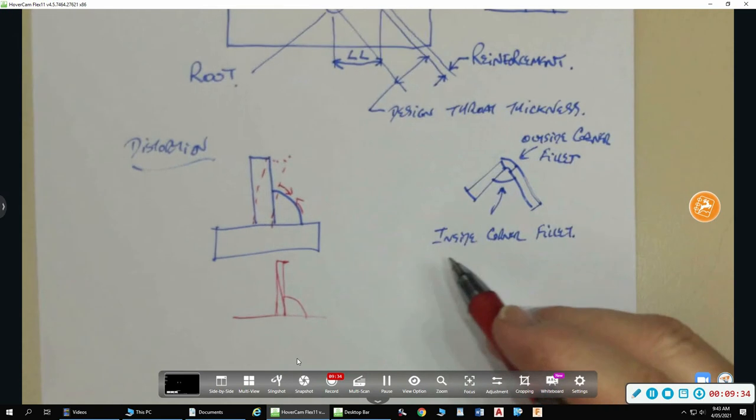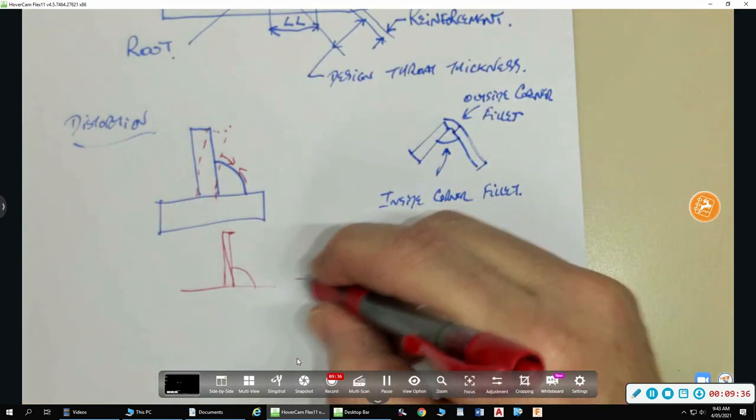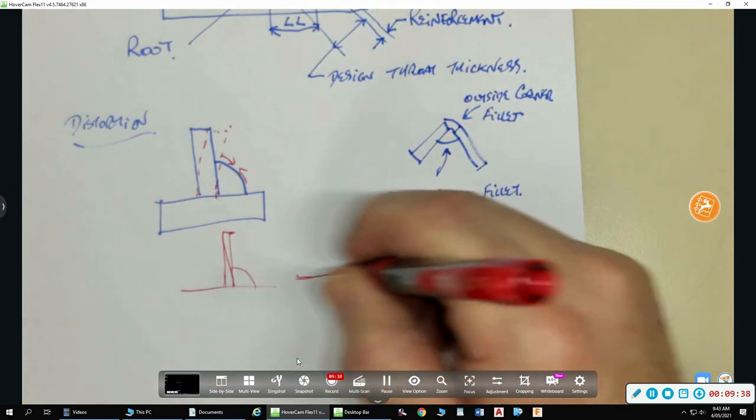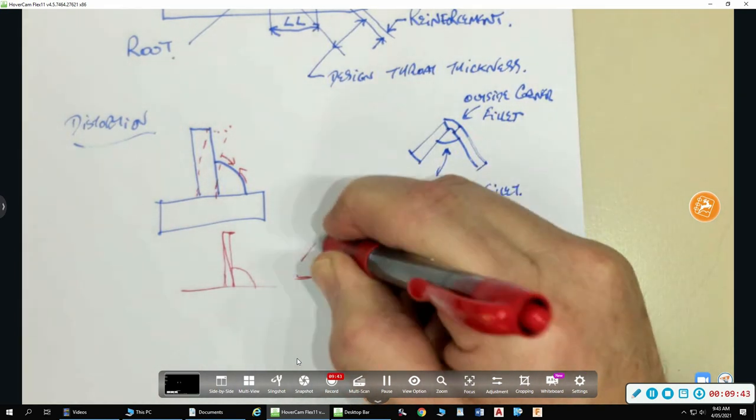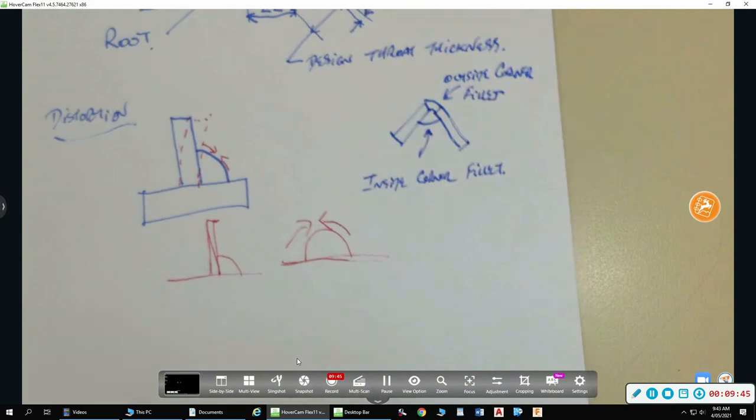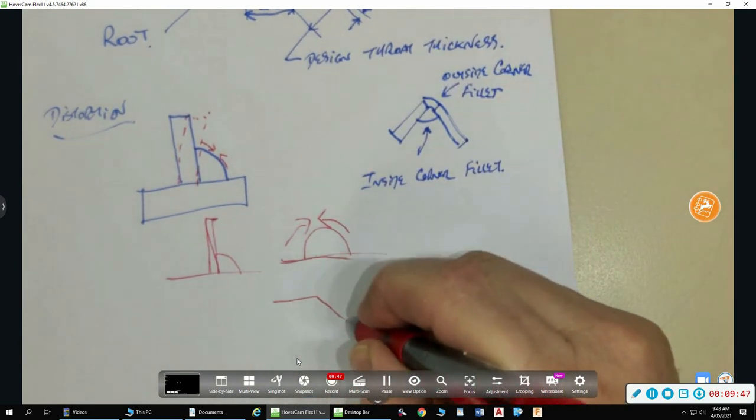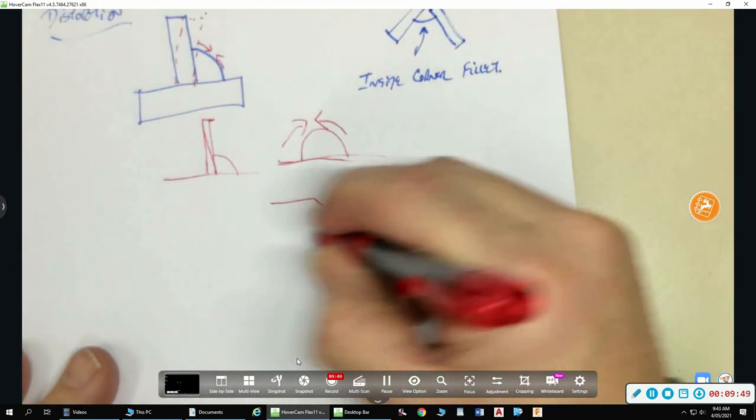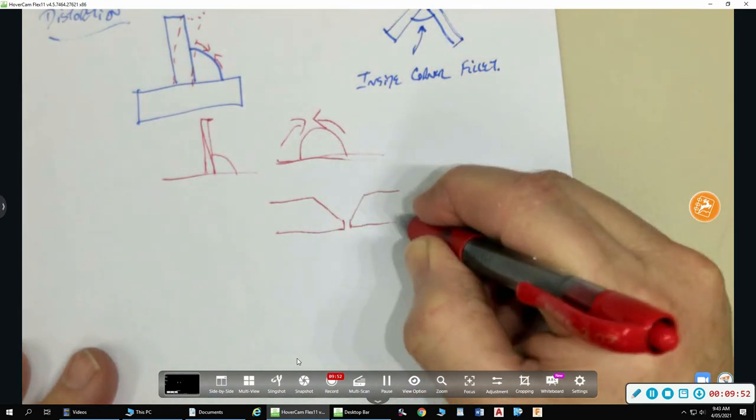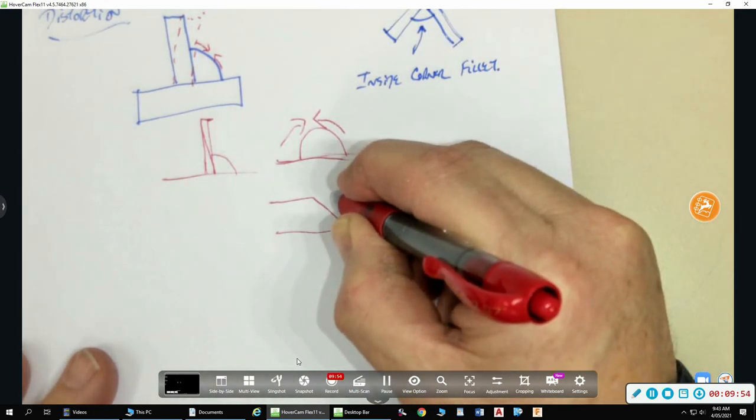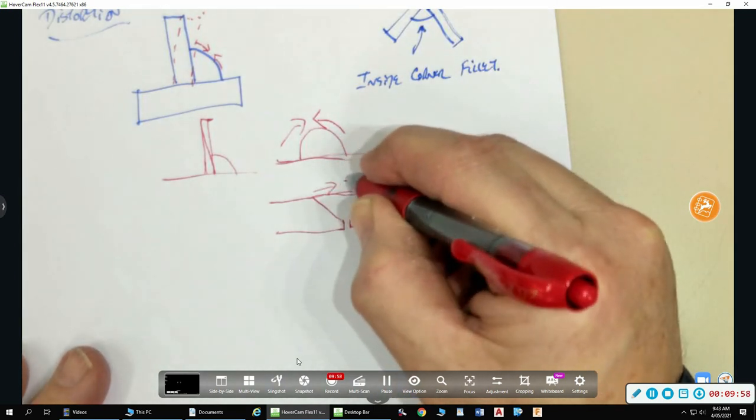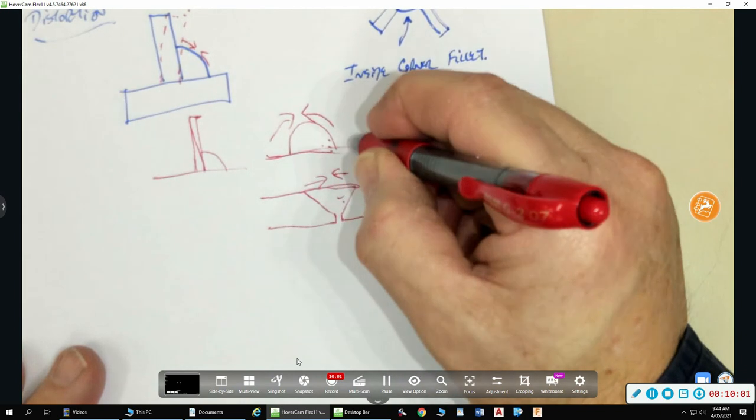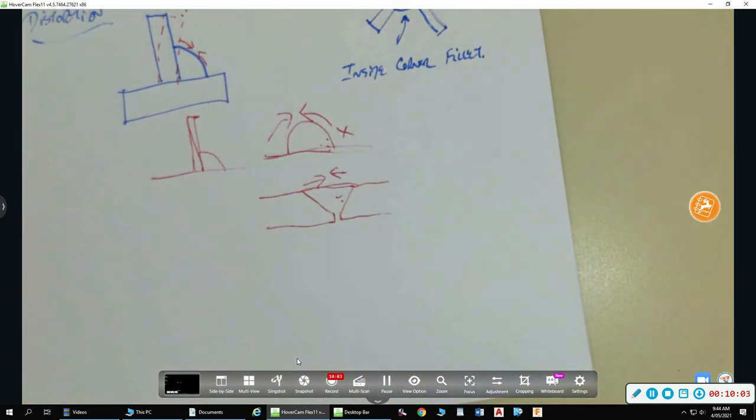This thing to be aware of, when it comes to any weld deposit, whatever it is, whether it's a butt weld or a fillet weld, the more reinforcement you deposit, the worse that distortion is going to be. If I've got a nice butt weld here, and I've put just a nice little bit of reinforcement on top of that weld, it's still going to contract, but I'm not going to have a problem like I would do with that. That's major. That extra weld you put in, distortion problems become huge.